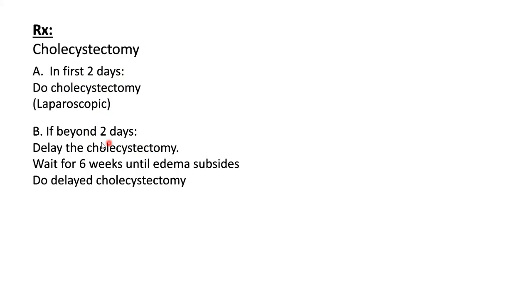Imaging: abdominal ultrasound is diagnostic, showing acoustic shadows. Plain X-ray is not very helpful as most stones are radiolucent. HIDA scan can confirm acute cholecystitis (if contrast doesn't fill the gallbladder, the cystic duct is blocked). CBC shows elevated white blood cells; liver function tests are normal in uncomplicated acute cholecystitis. Treatment: early cholecystectomy (within first two days) is ideal. If the patient presents after two days, perform delayed cholecystectomy after six weeks to allow the acute inflammatory process to resolve.